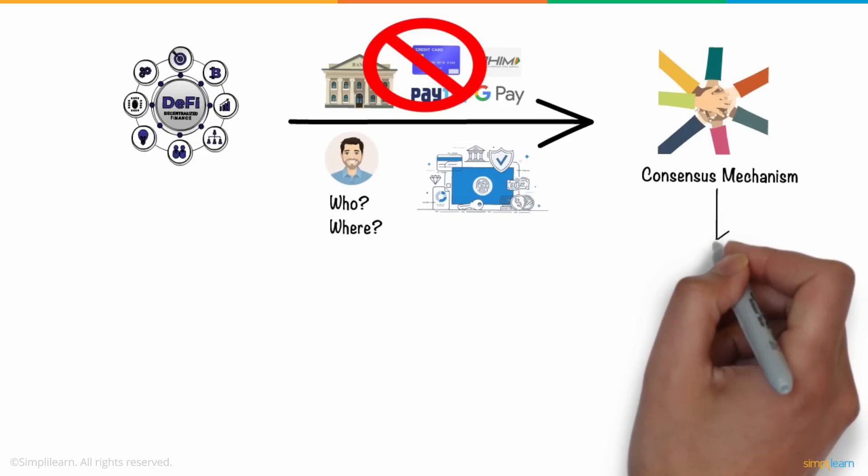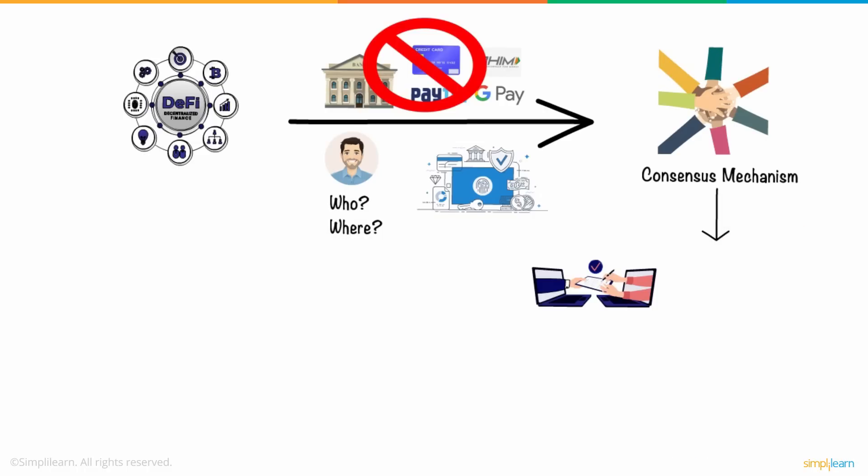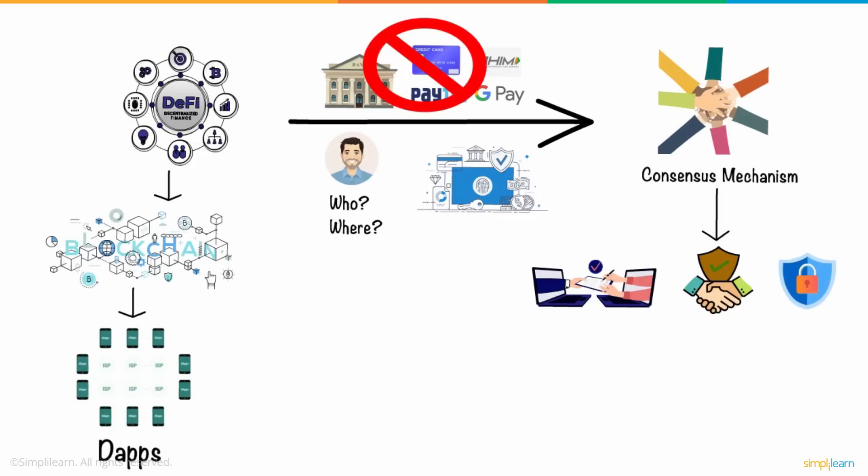A consensus mechanism refers to the methods used to achieve agreement, trust, and security across a decentralized computer network. Now, this DeFi mechanism runs in a decentralized environment. And this is where blockchain comes into the picture. It provides the environment where you can simply create your decentralized programs, or dApps, according to your requirement.